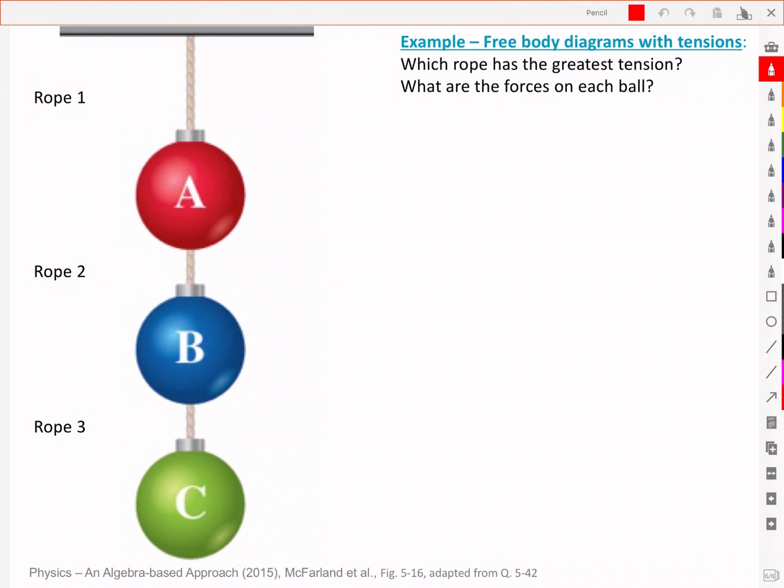Here's an example with three festive baubles connected in series with segments of rope. Let's identify the forces on each ball explicitly using a free body diagram for each and see how the tensions transfer the forces.